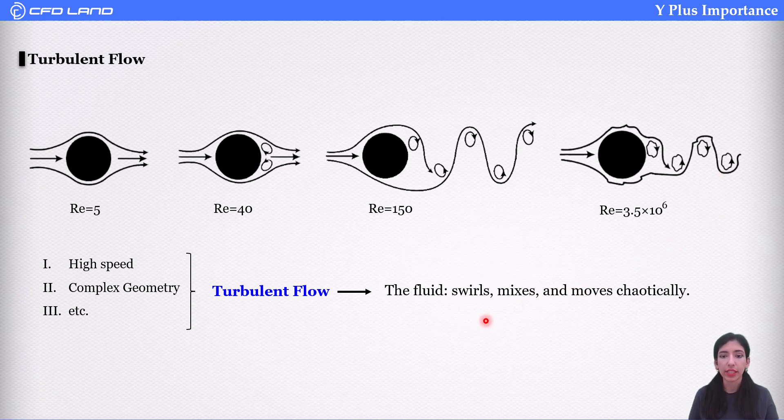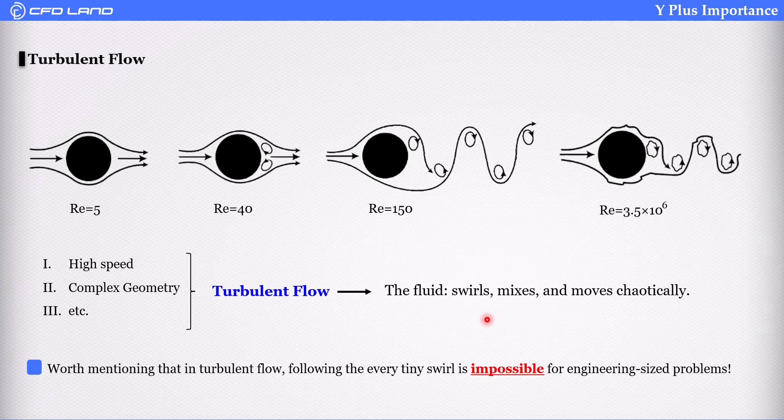Then fluid starts to swirl, mix, and move in chaotic ways. These swirls, let's call them eddies. To capture the tiniest eddies in a flow is impossible for an engineering-sized problem. Okay, so what do we do? We use modeling.